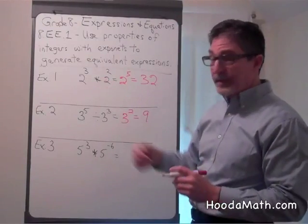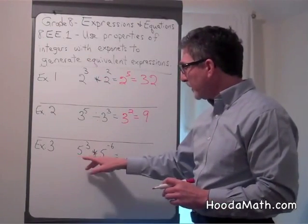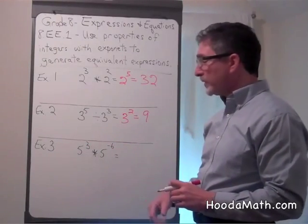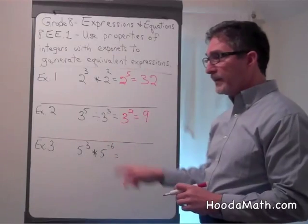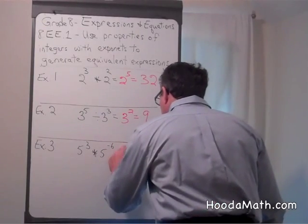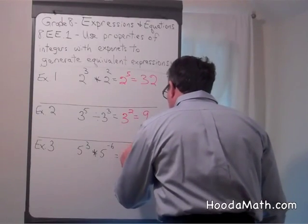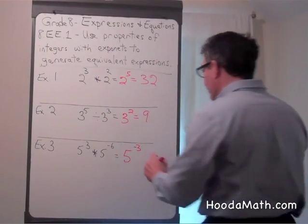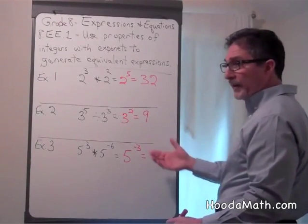Once again, like example 1, when we have the same base and exponents and we're multiplying, we add the exponents. Keep the base the same, which gives us 5 to the negative third power. A negative power means that you have the reciprocal of 5 to the third,